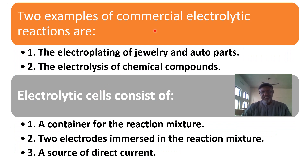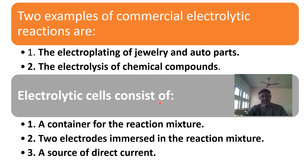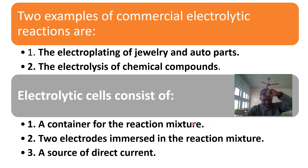There are two examples of commercial electrolytic reactions: electroplating of jewelry and auto parts, and electrolysis of chemical compounds. An electrolytic cell consists of a container for the reaction mixture, two electrodes immersed in the reaction mixture, and a source of direct current.